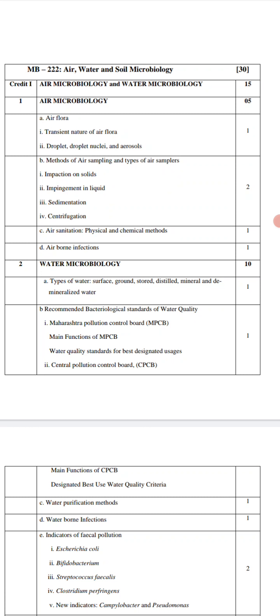That is the difference between normal flora and transient flora, which are types of air flora. Next is droplet, droplet nuclei, and aerosols. Droplets are small drops of liquid. Droplet nuclei are aerosols which are formed from evaporation of respiratory droplets. Aerosols are solid particles or liquid particles which are suspended in air.